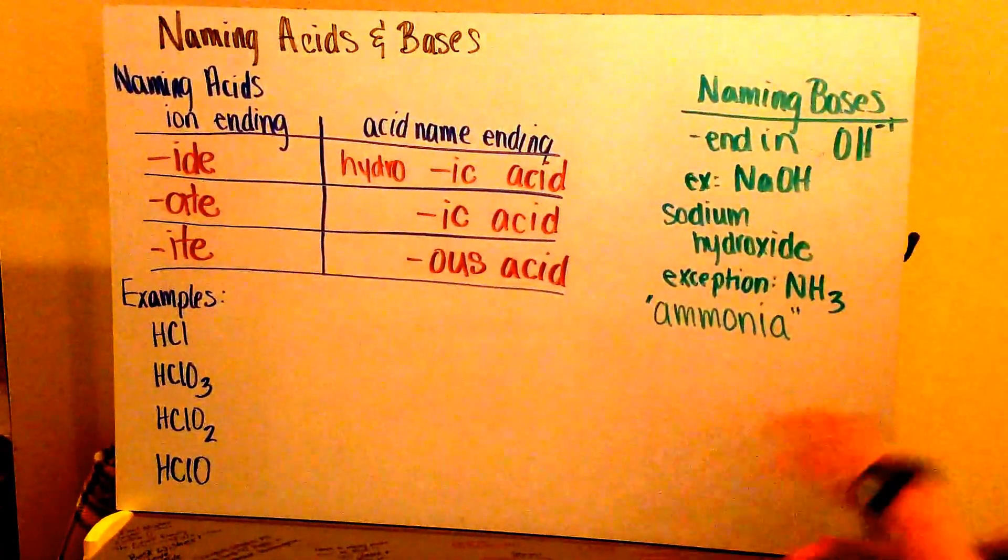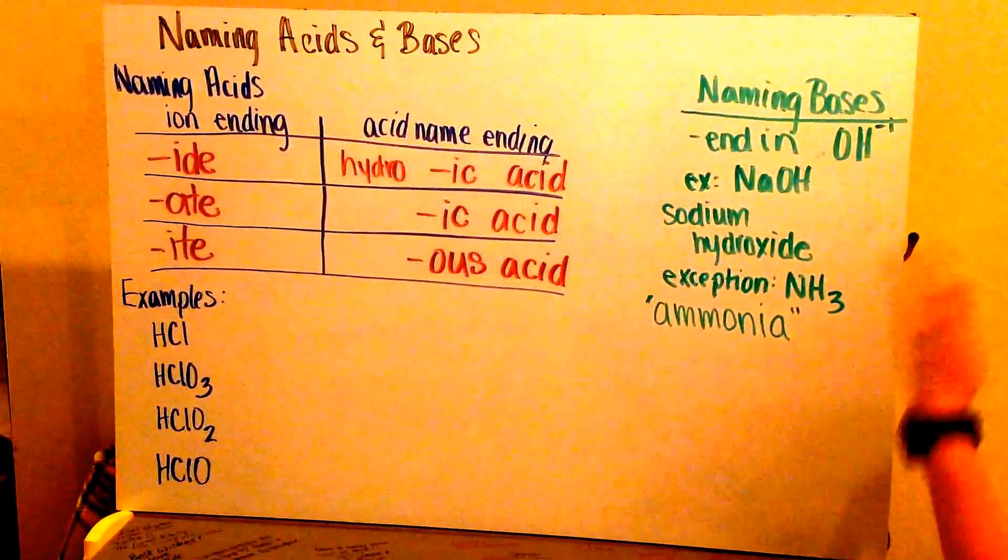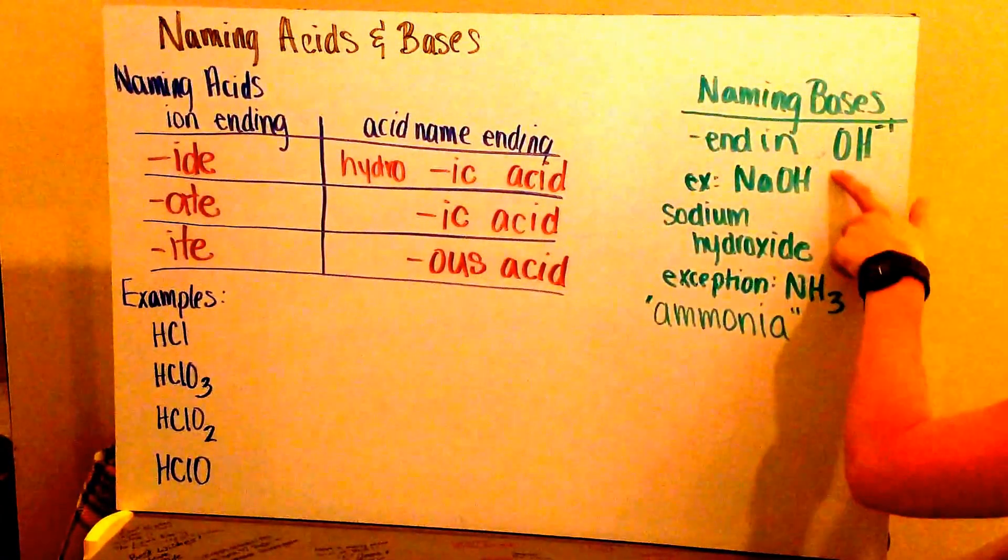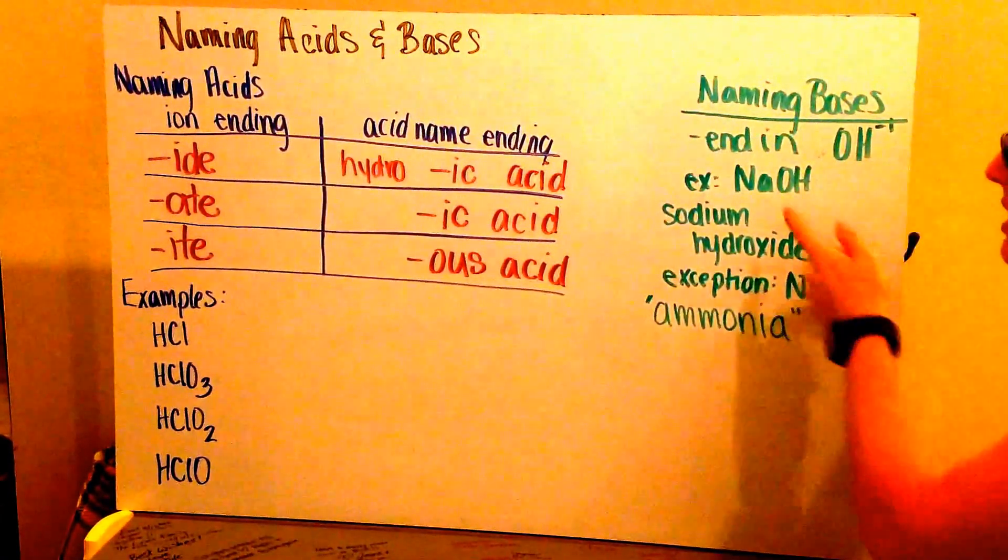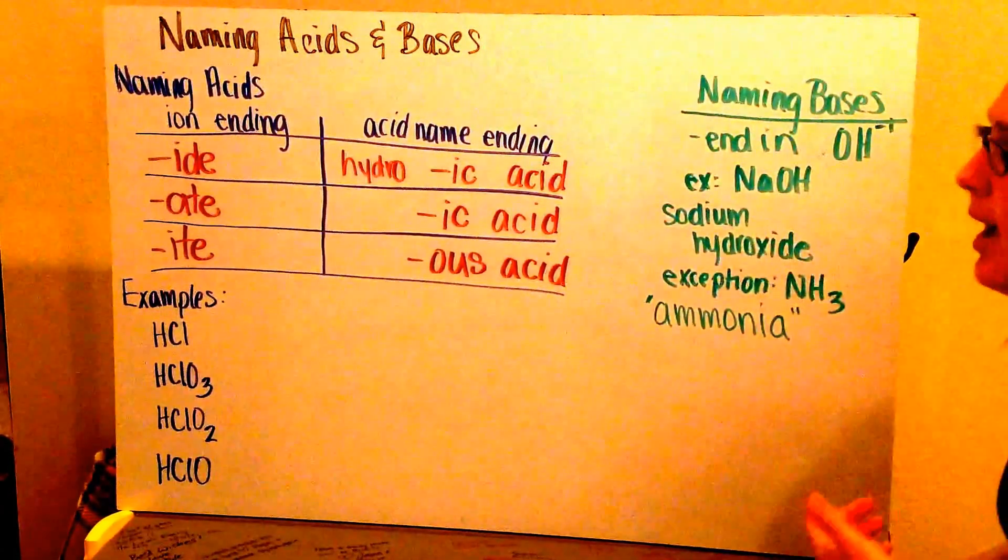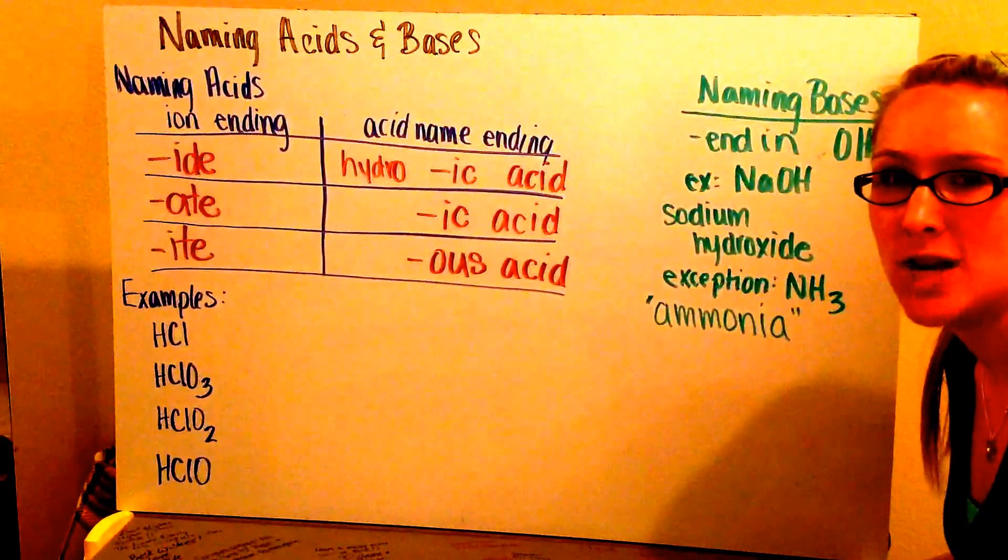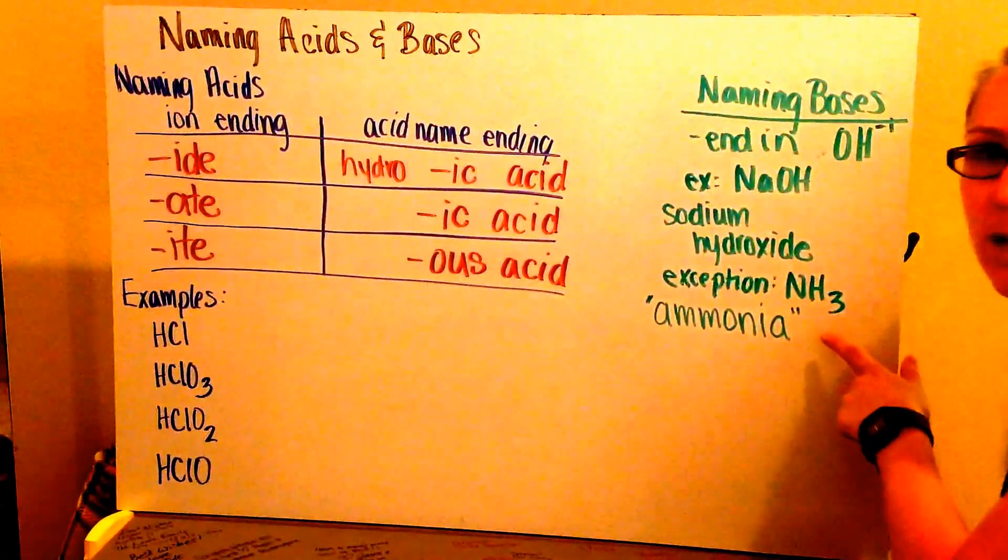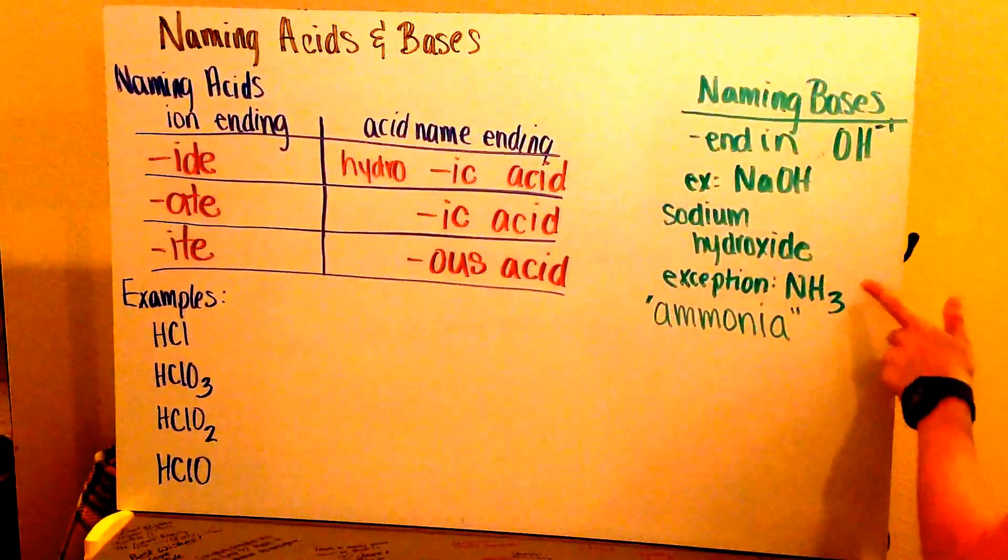So bases you already know how to name. A base is something that ends in hydroxide or OH, and so this is our OH or hydroxide ion. So an example is NaOH. You know that's just sodium hydroxide. All bases end in hydroxide except for ammonia. Ammonia is NH3 and you've seen this a couple of times. You just might not have realized that that's a base.